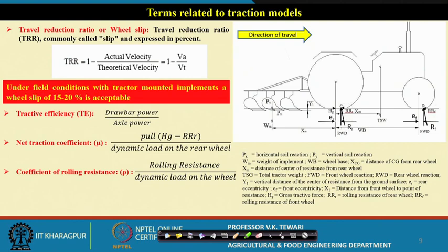We also discussed traction prediction models. When there is a pull behind the tractor due to the implement, there will be a change in the wheel reactions and hence weight transfer — which we do not see physically but does occur. The moment Rf comes to 0 the implement gets lifted. At the limiting value of Rf we find the maximum pull, and we must limit the maximum pull within that value.